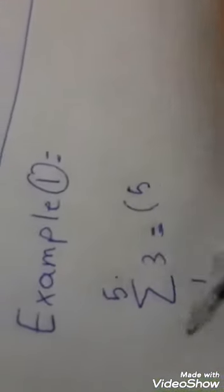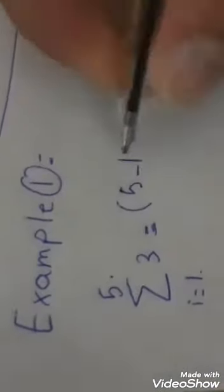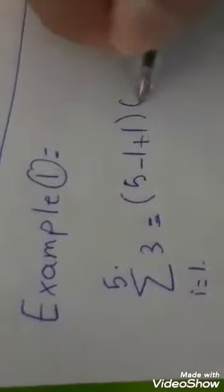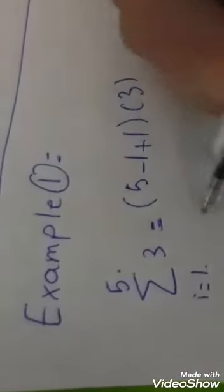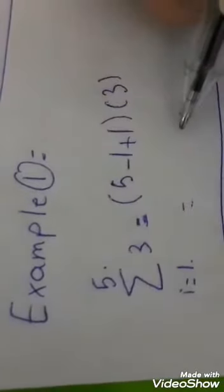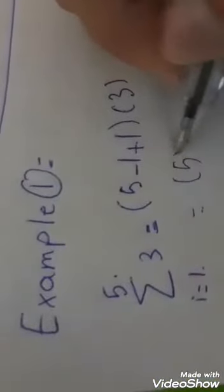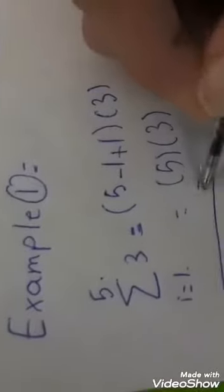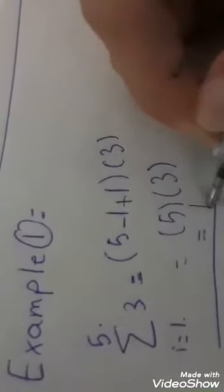We start by five and we subtract one, we always add one, we multiply it by three. Five minus one plus one equals five times three, and the answer is fifteen.